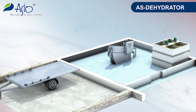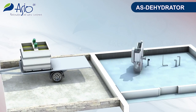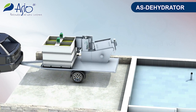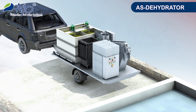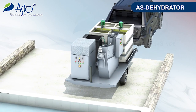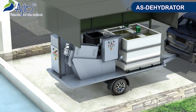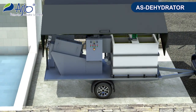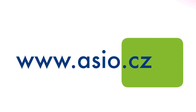ASIO offers to run such a test for you with the use of its mobile plant. The dehydrator, mounted on a trailer together with other parts of the sludge end equipment and fitted with interconnecting hoses, is capable of being transported directly into your plant. After this, it is only necessary to connect water and power, prepare the flocculant solution, and test the dehydrator with your sludge type.